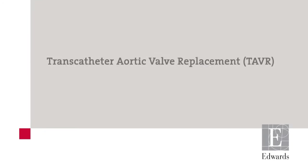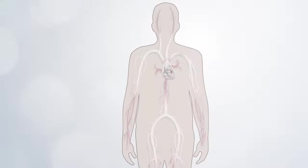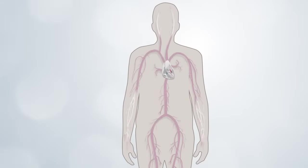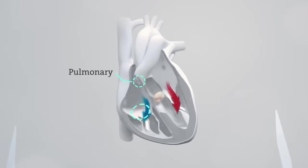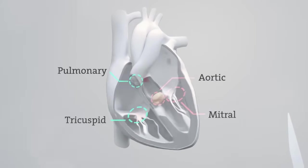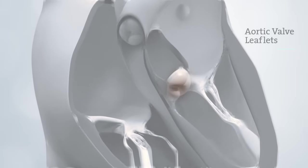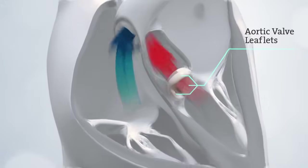This is an animation showing transcatheter aortic valve replacement through the transfemoral approach using the Edwards Sapien III transcatheter heart valve. The heart's main function is to pump blood to the rest of your body. The heart contains four valves. Normal valves have two or three flaps of tissue called leaflets that open and close like gates to control the flow of blood through your heart.